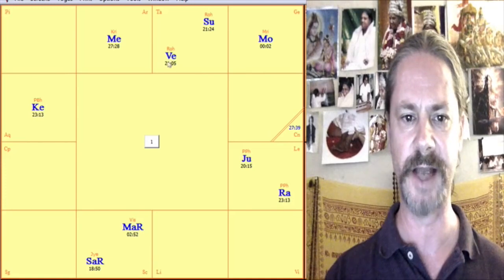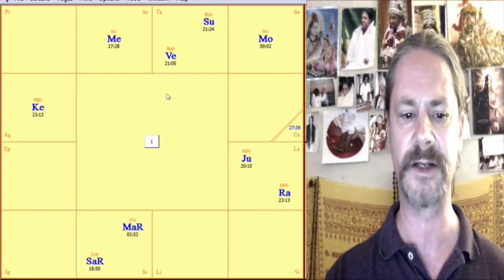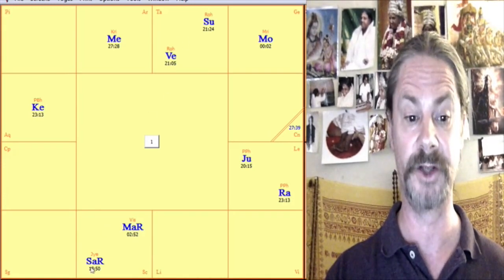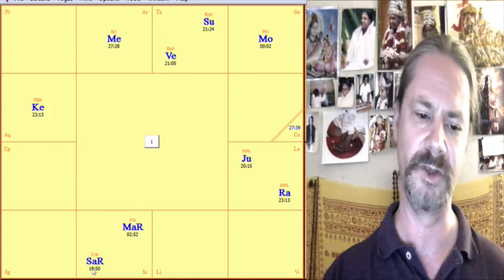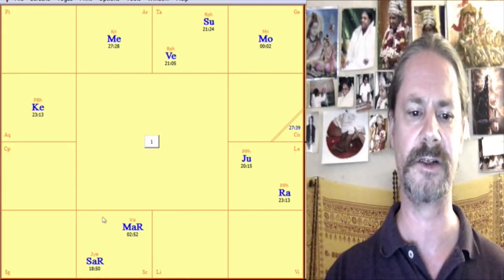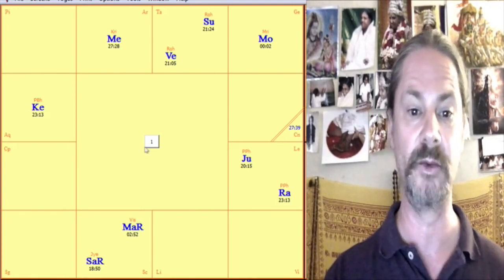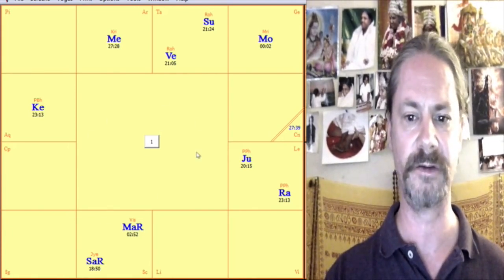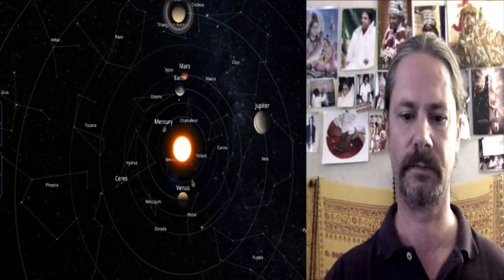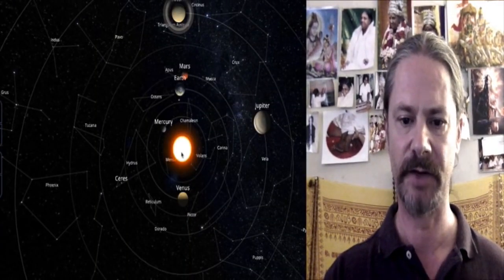So we see on this day when Venus and the Sun are exact, Saturn is exactly opposite, pretty much. Saturn is 1850, which is like 19 degrees, and Venus and the Sun are 21. And so if we go back to look at the sky, we'll see that we just put the Earth here in the middle. We see that again, right here.